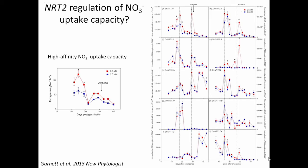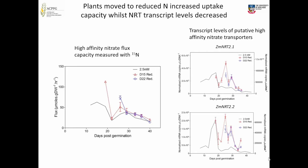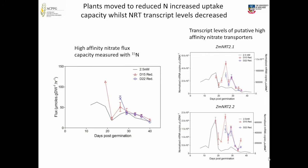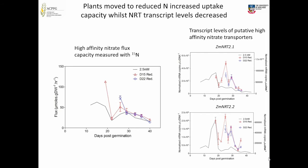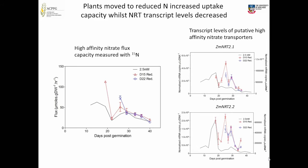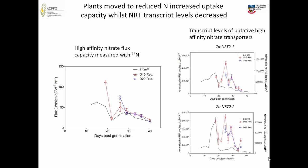That was all steady state. At two time points — day 15 and day 22 — we changed plants from high concentration nitrate to low concentration. The uptake capacity had a major increase just two days later, showing they responded really quickly. Looking at NRT2.1 and 2.2, there was a major increase in transcript levels in response. However, there was a big change in flux capacity before any change in transcript levels — so it wasn't based on transcription alone.